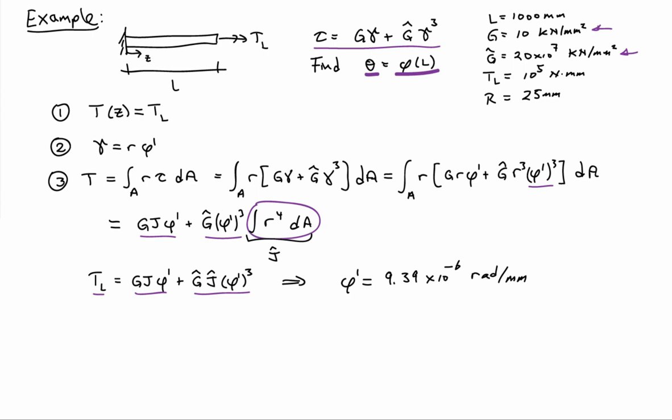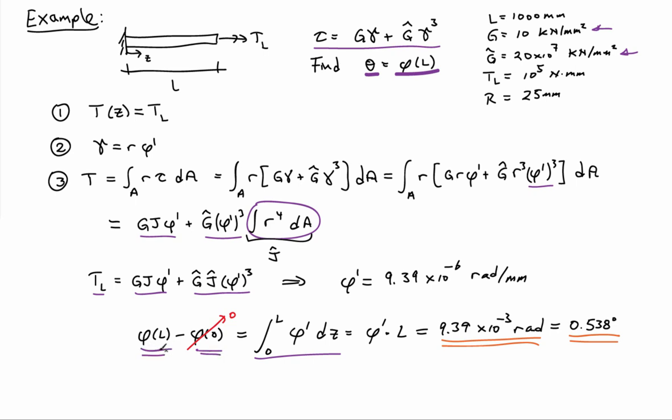And knowing the twist rate, I can integrate from one end of the bar to the other. So I can integrate phi prime from 0 to L. I know that phi of 0 is equal to 0 because it's built in. So that leaves me with an expression for phi of L.